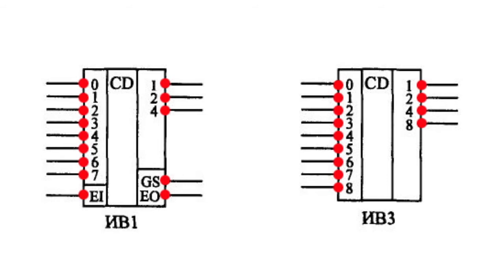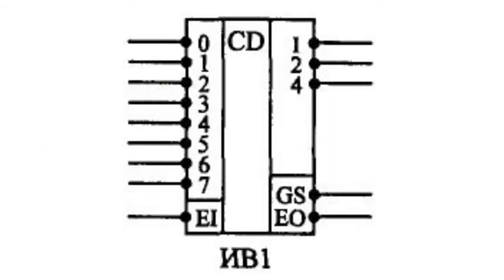The microcircuit may have an EI input, or enable input. A signal at this input determines when the scrambler starts working. There might be additional outputs, for example, a GS output indicating any input signal or an EO carry output.